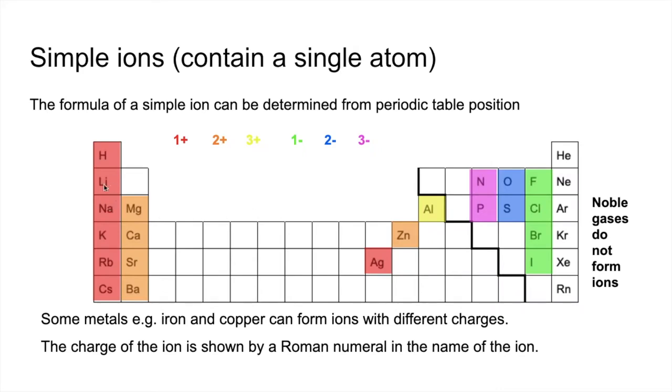So for example, lithium doesn't need a Roman numeral. It wouldn't be lithium Roman 1. Because lithium only forms a 1 plus ion. However, copper you can see there. So that's copper with a Roman 1 is the Cu plus or Cu1 plus ion. Copper with a Roman 2 is the Cu2 plus ion. And likewise for iron, that typically would form iron Roman 2, Fe2 plus. And iron Roman 3, Fe3 plus.